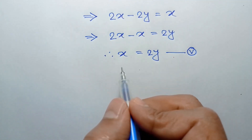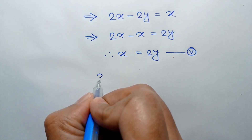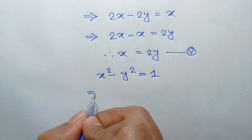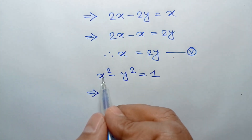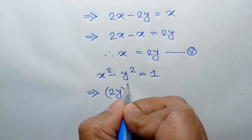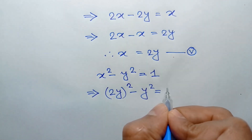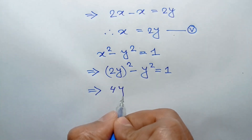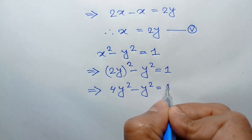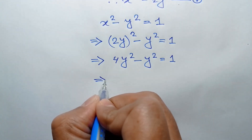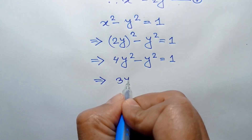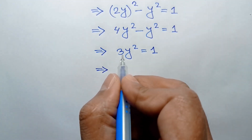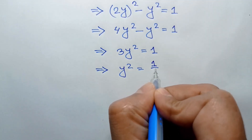Now, substituting the value of x into equation 1, we have x squared minus y squared is equal to 1. Substituting x equals 2y, we get 2y whole squared minus y squared equals 1, which is 4y squared minus y squared equals 1, so 3y squared equals 1. Dividing both sides by 3, we get y squared is equal to 1 over 3.